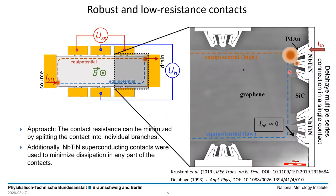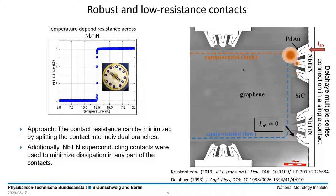The quantum Hall devices apply a reworked contact design on which I was working at NIST. It uses source, drain, and Hall contacts that are split into individual branches to integrate the principle of the so-called Delahaye multiple series connection. Additionally, the contacts apply a layer of superconducting niobium titanium nitride to minimize dissipation.